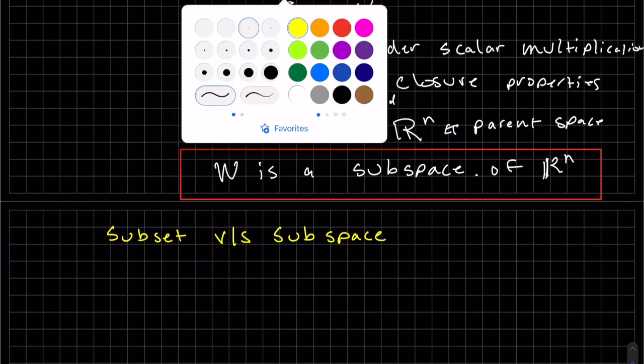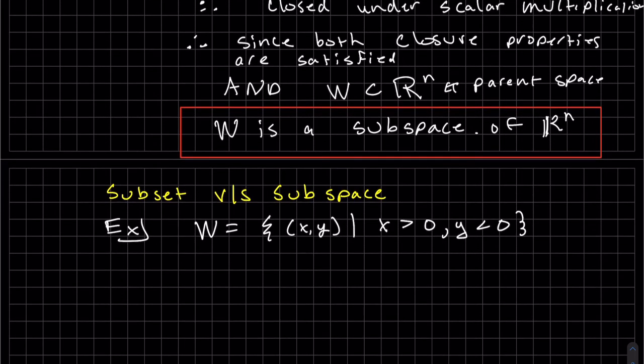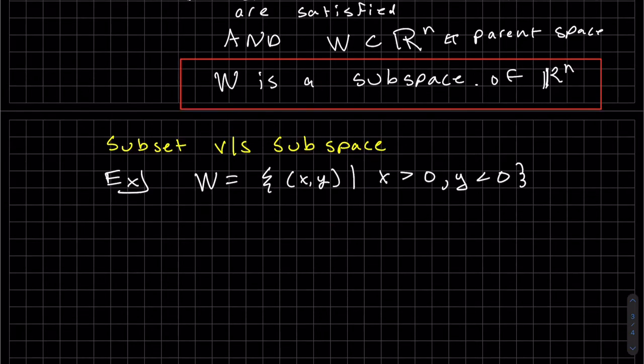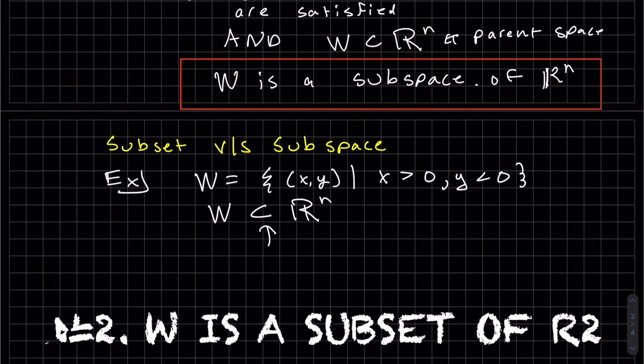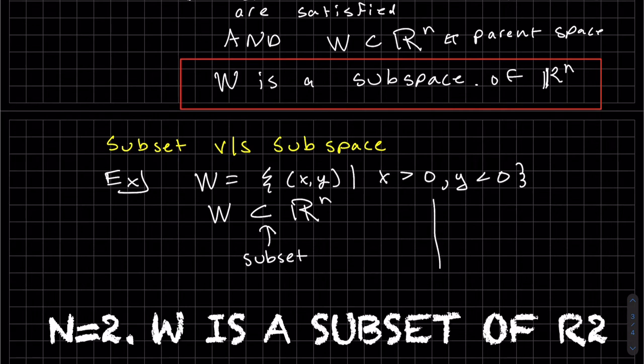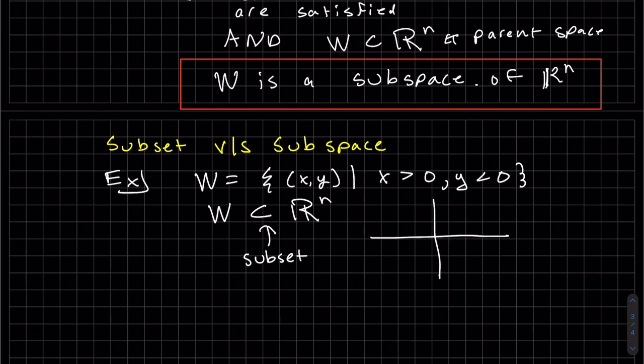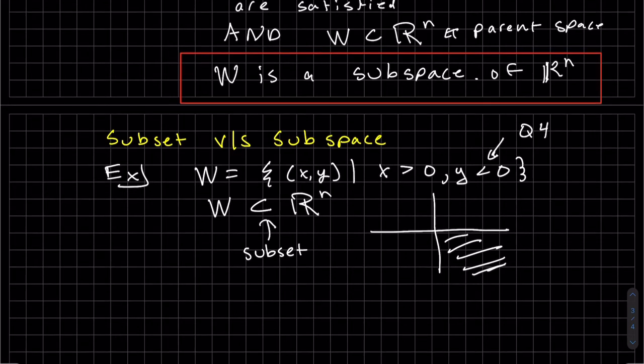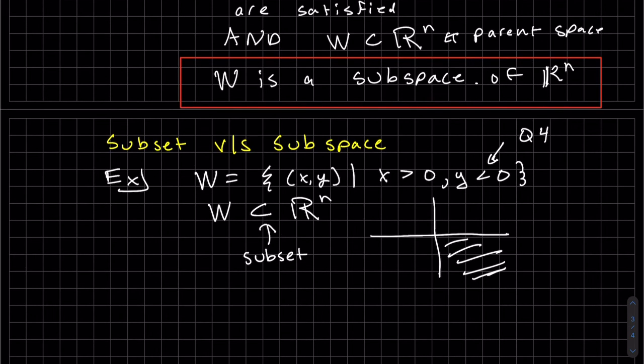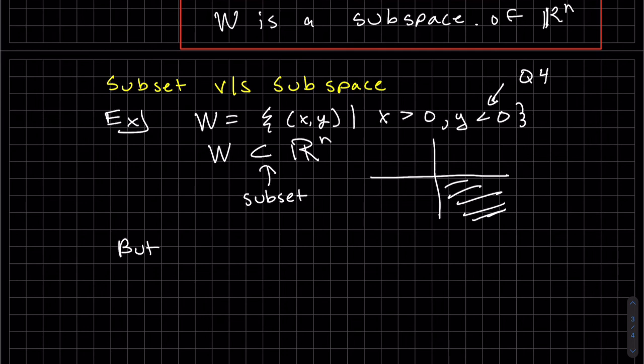I'm just going to show you the difference. Here's a set W made up of ordered pairs. That tells you right off the bat, since W is an ordered pair, it's a subset of R^2. Let's draw the picture. Here's R^2. X is greater than 0, but at the same time Y is less than 0. This is quadrant 4, so that's a subset. W is a subset. But we already know this is a counterexample to not being a vector space.